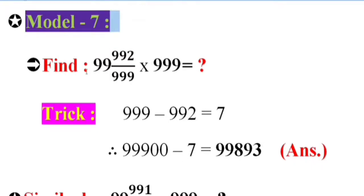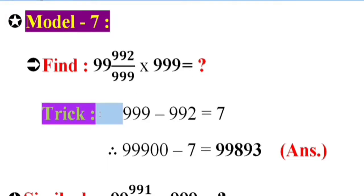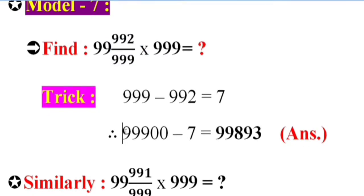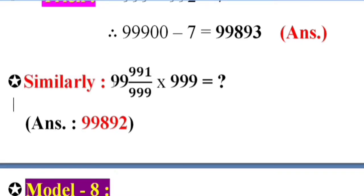Model 7. Find 99 and 99, 2 by triple 9 into triple 9 equal what? Using the trick: 999 minus 992 equals 3. Therefore, double 9 eight, 9 three. Answer: 998993. Similarly, 99 and 991 by triple 9 into triple 9 equals what? Answer: 998989.